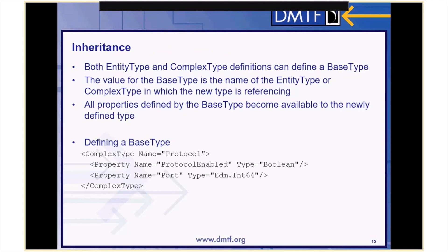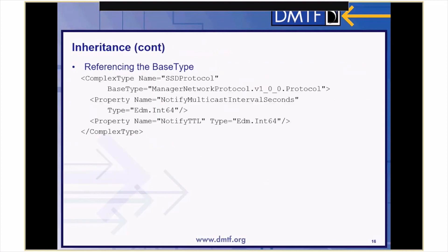CSDL allows some data types to inherit from one another. Both entity type and complex type definitions can define a base type value — the name of the entity type or complex type being referenced. Complex types can only inherit from other complex types, and entity types can only inherit from other entity types. All properties defined in the base type become available in the newly defined type. In this CSDL example, we define a complex type named protocol with properties protocol-enabled and port. Later, we create a new complex type called SSD protocol, which defines its base type as networkmanagerprotocol.v100.protocol. This type adds properties notify multicast interval seconds and notify TTL, but also inherits protocol-enabled and port from its base type.